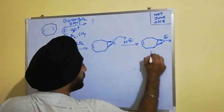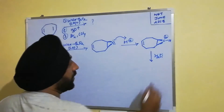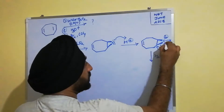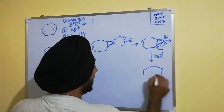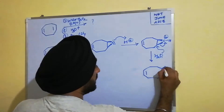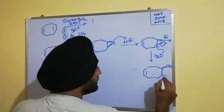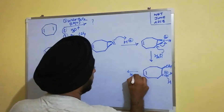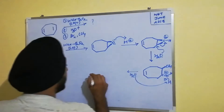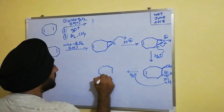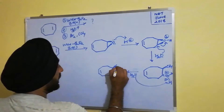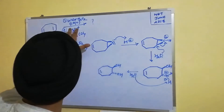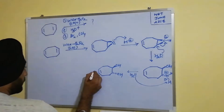Water attacks from the back side in an SN2-like fashion, opening the epoxide. The stereochemistry we get is anti. Water comes in, removes the positive charge, and we end up getting the trans-diol product.